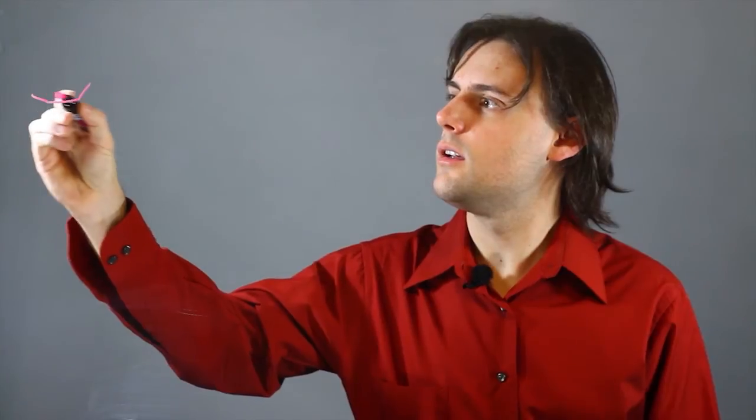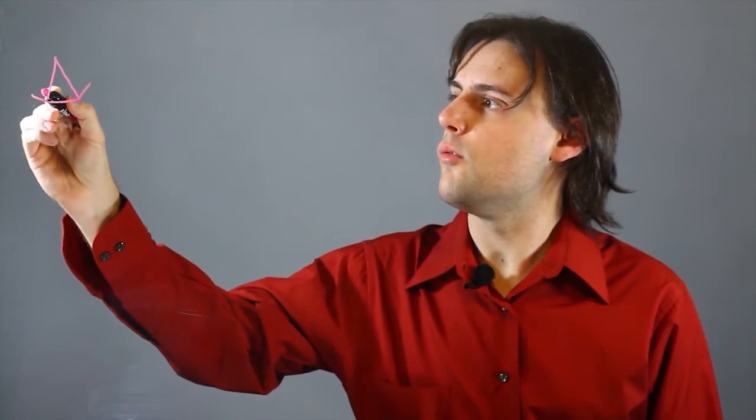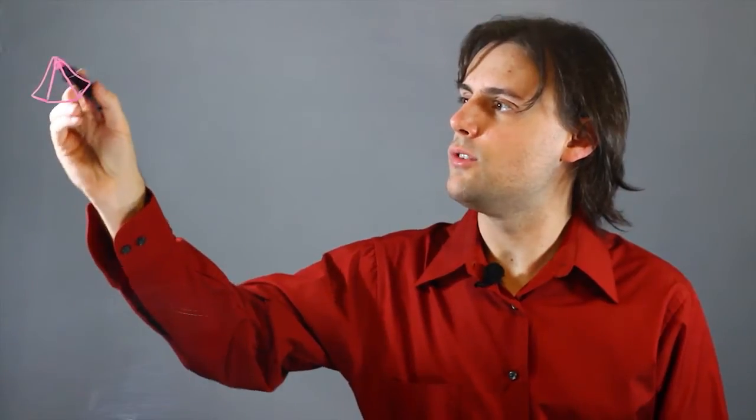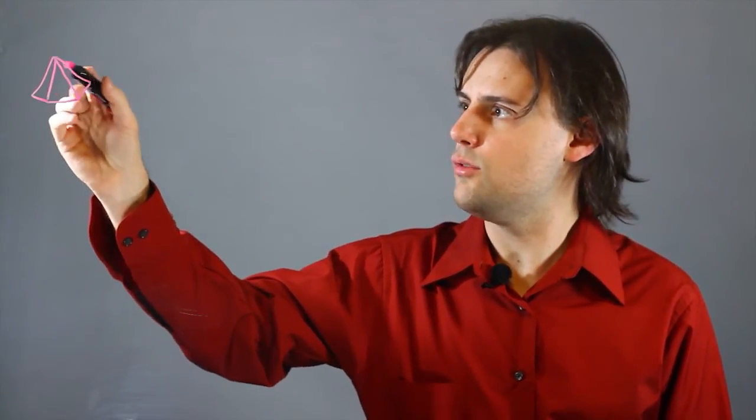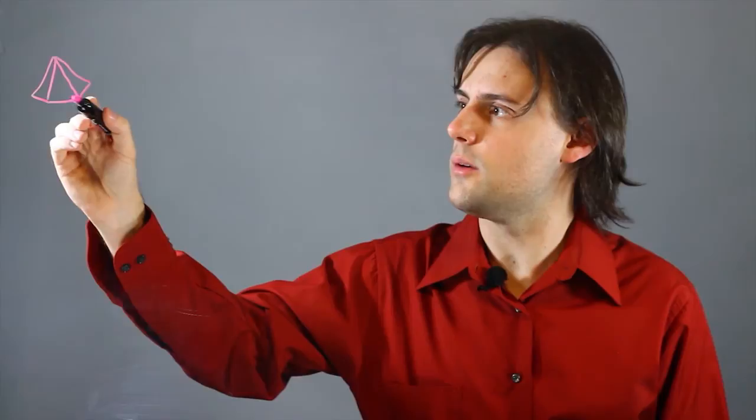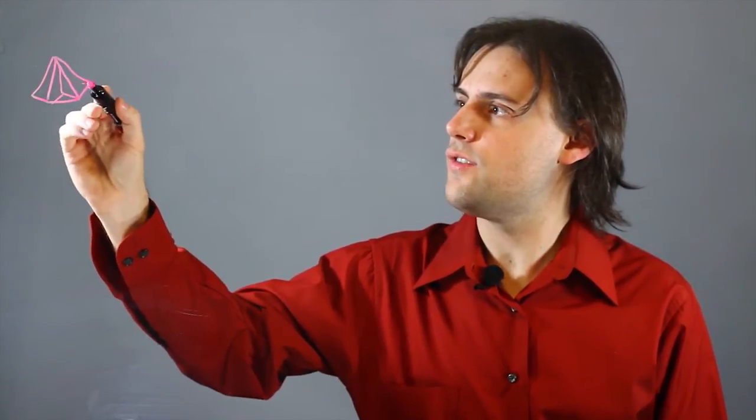So a pentagramic pyramid would look from one side like this, where you would have two sides, two faces on the other side of this pyramid, and each face of this pentagramic pyramid actually has three triangles in it.